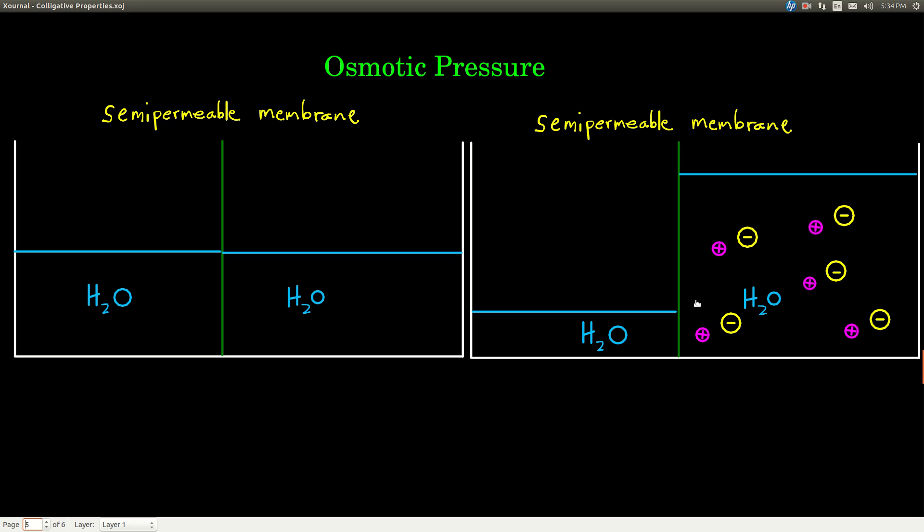Of course, it can never get there, but what happens is as water passes here from the left to the right from the side with fewer solute particles to the side with more solute particles, this level of water rises. Now, remember atmospheric pressure is pushing down on it. Also, as this side, this column of water gets higher and higher, gravity is also pulling it down. And so that increases the pressure at the base down here.